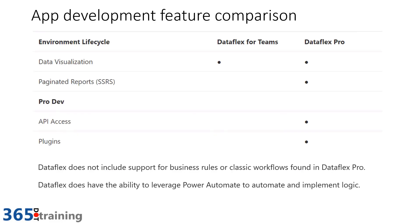From an application development perspective, you can build a Power App surfaced in Teams, but not standalone — standalone applications require Dataflex Pro capabilities. Paginated reports using SSRS and pro-dev features like API access or plugins also require Dataflex Pro. However, you get full Power Automate capabilities including the Common Data Service current environment connectors, which are directly applicable for both Dataflex and Dataflex Pro.